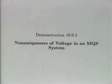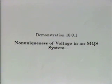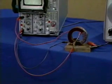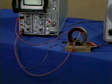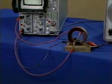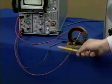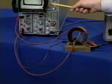The non-uniqueness of voltage in an MQS system can seem paradoxical, yet it is essential to the behavior of a common transformer. This experiment emphasizes this by showing how the voltages measured by these leads and the oscilloscope are path-dependent.